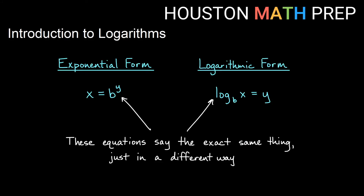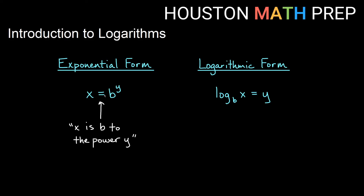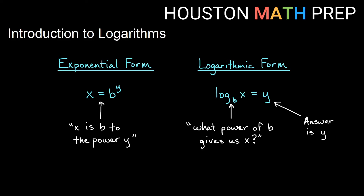Exponential operations and logarithmic operations say the same thing. If we have x equals b to the y, that's the same as saying log base b of x equals y. If I want to know what y is, y is a logarithm base b — when we're solving for an exponent, our answer is a logarithm. These equations just say the same thing, just said backwards from one another. This one says x is b to the power of y, and the other says what power of b gives us x. So we'll read "log base b" as: what power of this base gives us the object inside of the logarithm? And of course our answer is y.